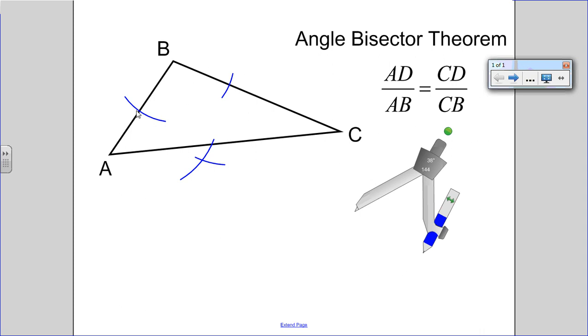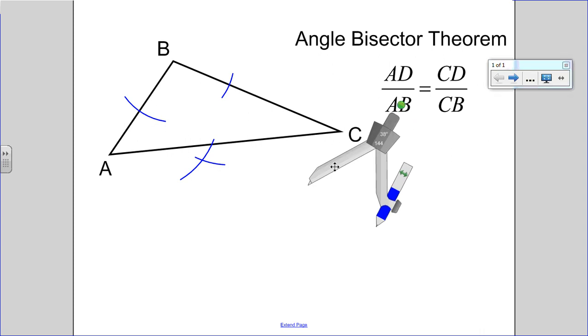You see that I've actually put some tick marks here with my compass, and this is actually the construction of finding the angle bisector of angle B.